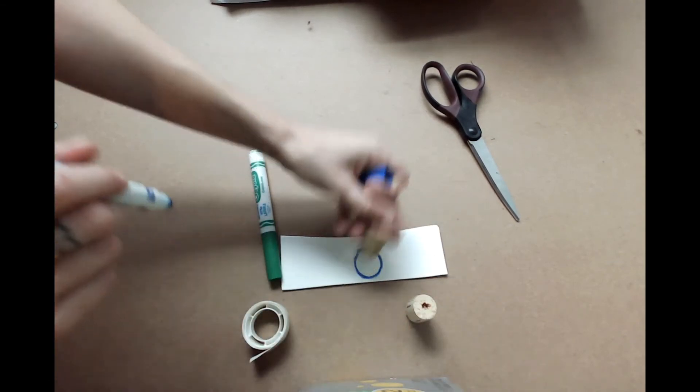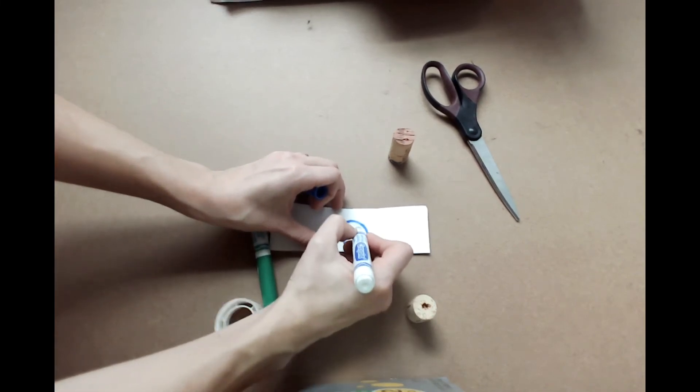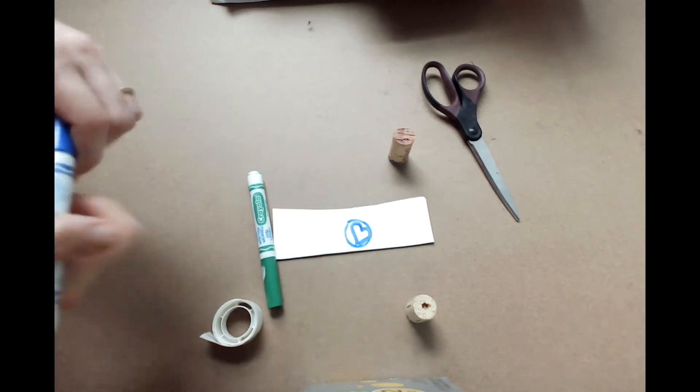For this project, I think I'm going to make a heart stamp. So inside of my cork circle, I'm going to draw a heart, and then I'm going to cut it out.